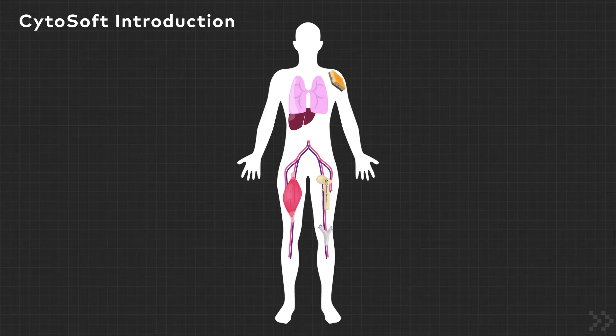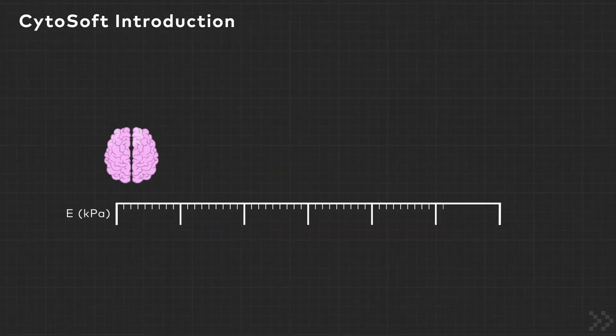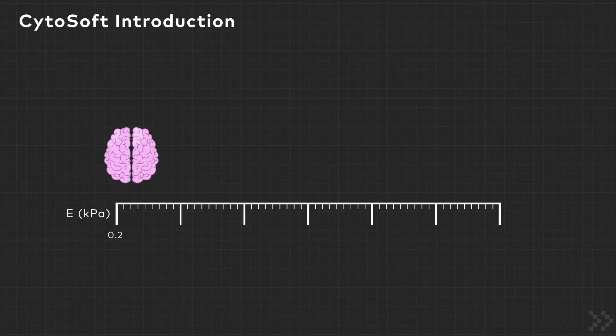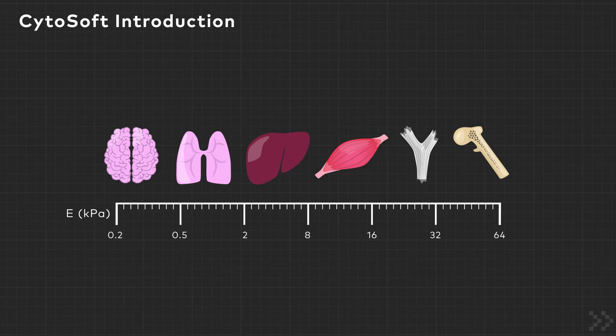Various areas throughout the body have significantly different degrees of matrix stiffness. Brain tissue is very soft with an elastic modulus of approximately 0.2 kPa, whereas cartilage and bone tissue is very firm at greater than 64 kPa.